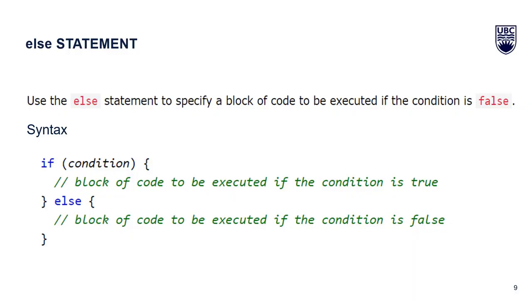Now let's understand the else statement. The else statement is used to specify a block of code to be executed if the condition is false. We start by writing the if condition with its block of code to execute when true. If the condition is not true — it is false — we use the else statement, which will execute a block of code when the condition in the if statement is false.